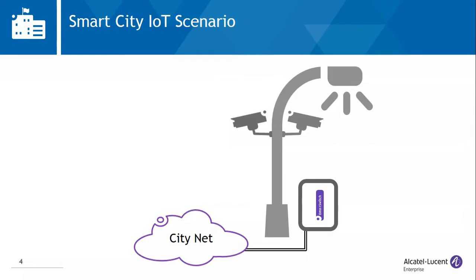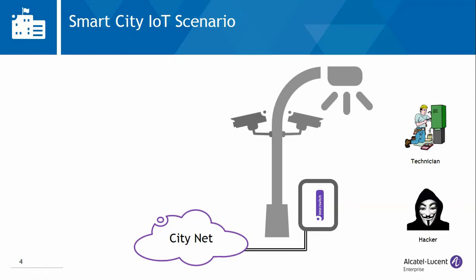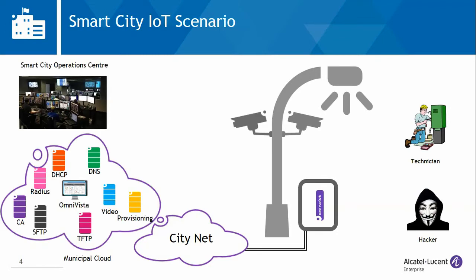We will refer to this scenario to illustrate these challenges and how to tackle them. This is a smart light pole scenario. The pole incorporates smart lighting, security cameras and various environmental sensors. Rugged OmniSwitch 6465s are installed within a cabinet on the side of the road and connect the smart pole to the CityNet. There is a technician who will install the switch and connect the devices, a hacker who will attempt multiple attacks on the network, and certain servers and applications to provision, configure and run the network from the operations center.